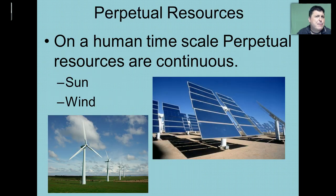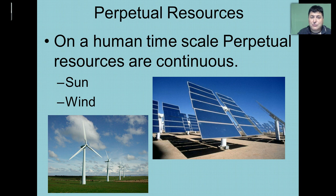A perpetual resource is something like the sun or wind, which on a human time scale are continuous and they're not likely to run out anytime soon.